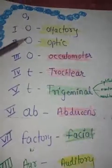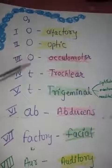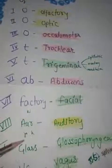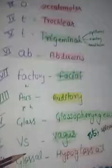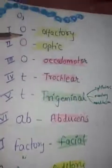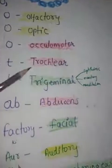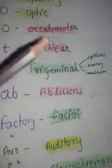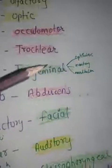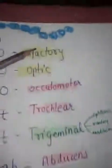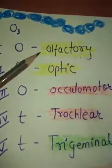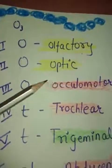Now let me explain: O, O, O, T, T, T — olfactory, optic, oculomotor, trochlear, trigeminal. On our face, the most prominent part is our nose, so the first cranial nerve is related to the nose — that is the olfactory nerve. The second O stands for optic nerve.